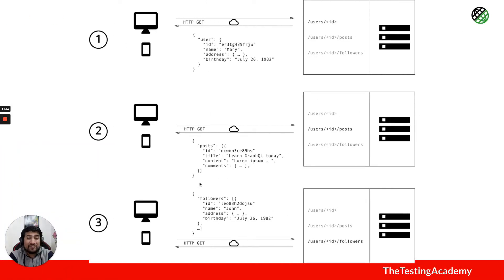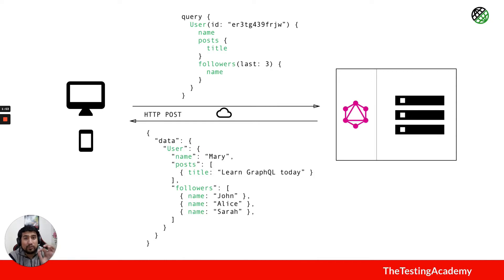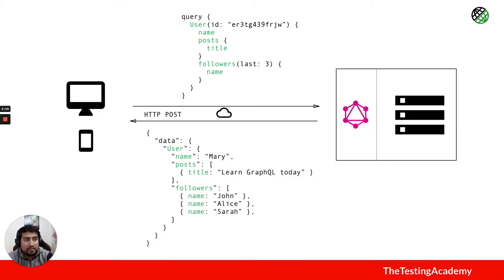In this example, if you see the traditional problem: you make a GET request and you get user ID, or if you make a GET request you get all the information - post request ID, title, comment, and everything. But how about just querying exactly what you need? I want ID, name, post title, and followers, and the GraphQL server will send you only that information. That's why it's very powerful - whatever the client wants, they get in the response.